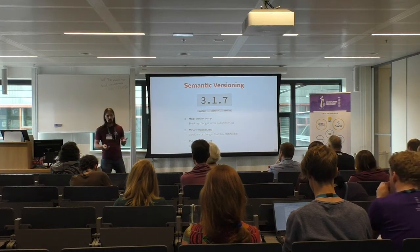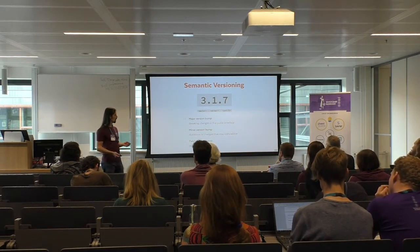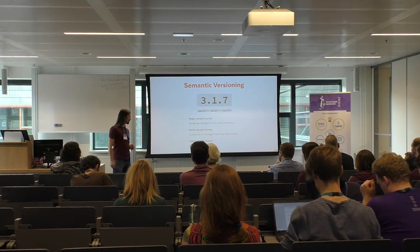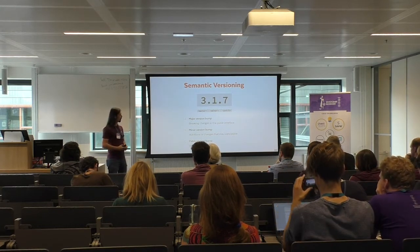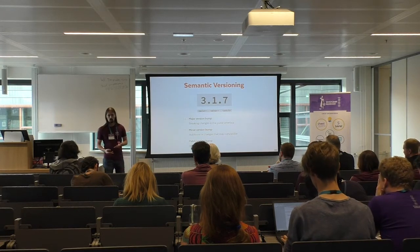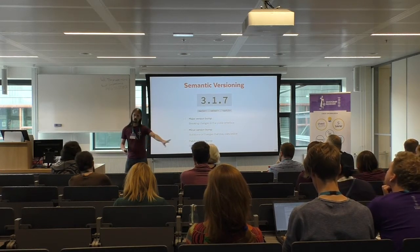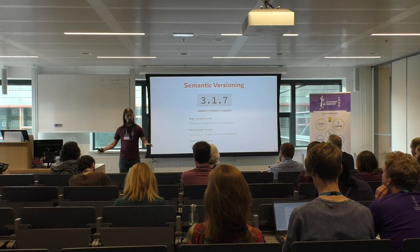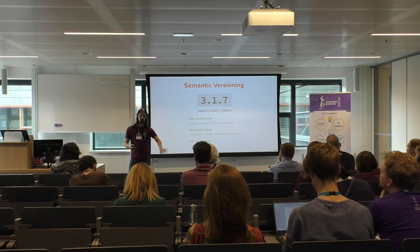If you bump the major version, it means you included breaking changes in the public interface — and that's what allows you to reduce technical debt again. A minor version bump means you had additions or changes that still stay compatible, and a patch version bump means you just did bug fixes. The major version bump gives you a get-out-of-jail-free card: at that moment you can say there will be a breaking change, the old version is still available for those who need it, and people can decide whether to support the new version, because there is a clean cut.